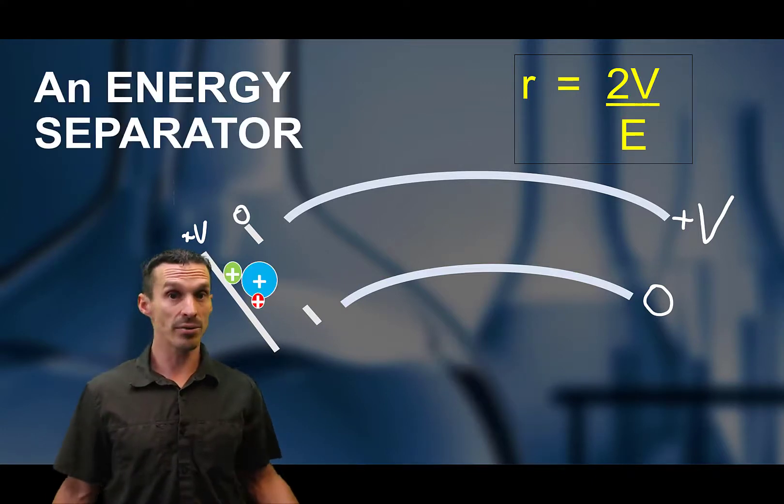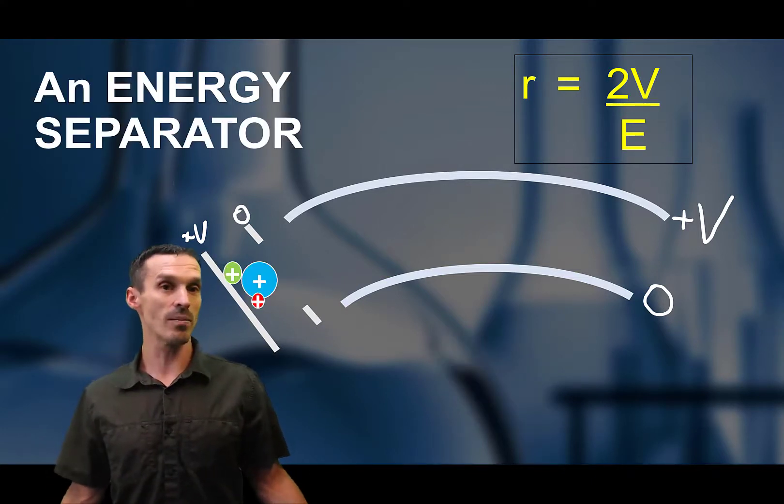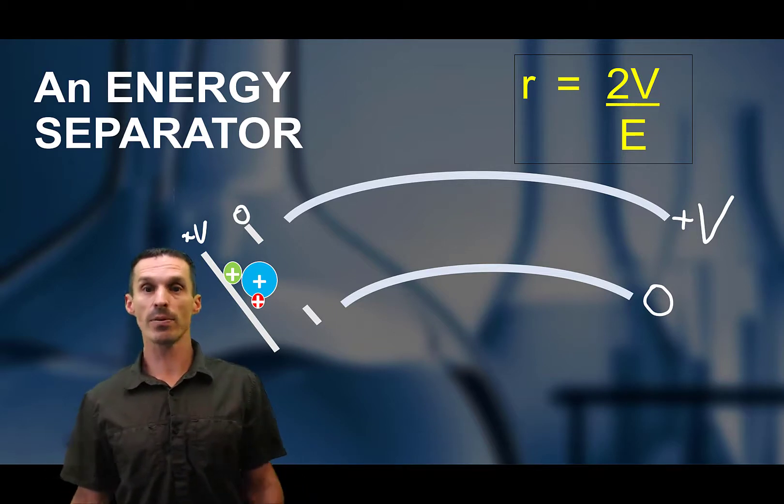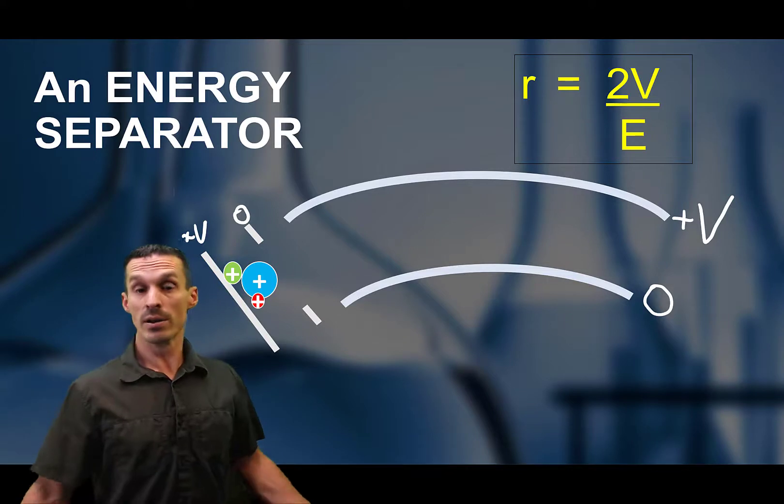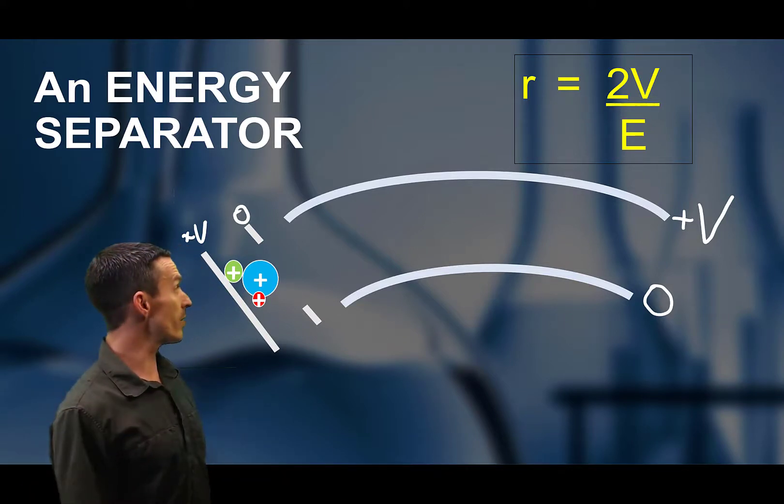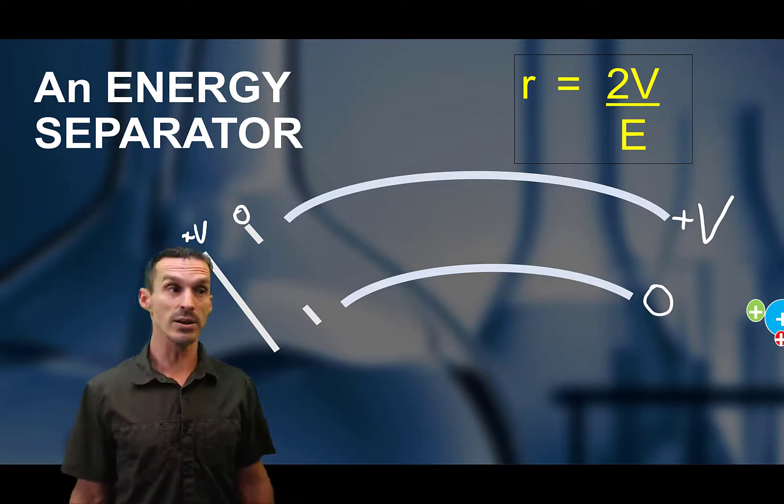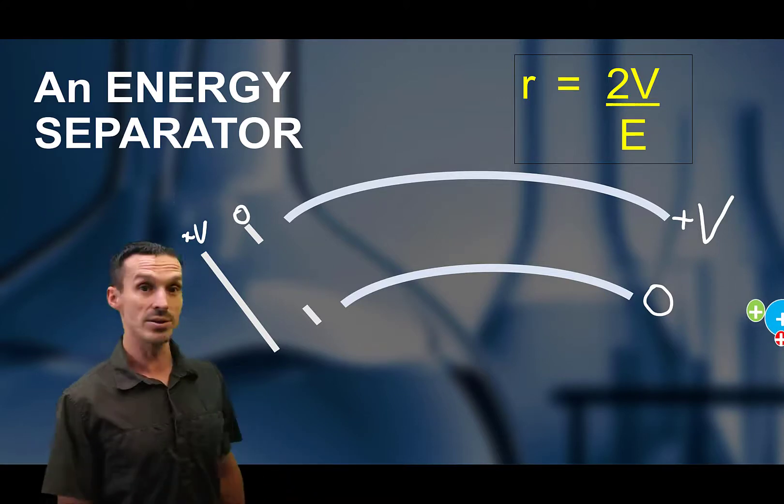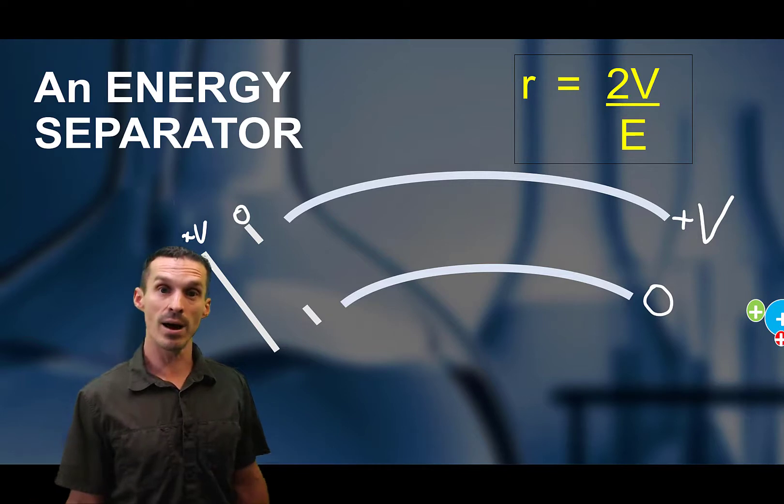Now, I should point out that this is not a mass spectrometer. So a mass spectrometer, we know, separates ions according to mass charge. So I have a bunch of different ions here, different mass to charge, but they're all being accelerated with the same voltage. They have the same kinetic energy. Nothing changes. They all move exactly the same path.